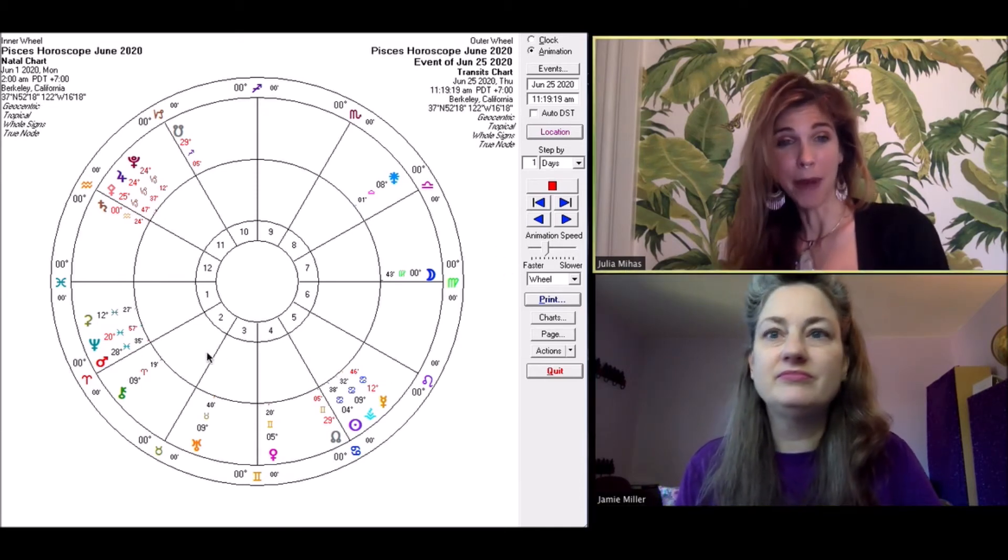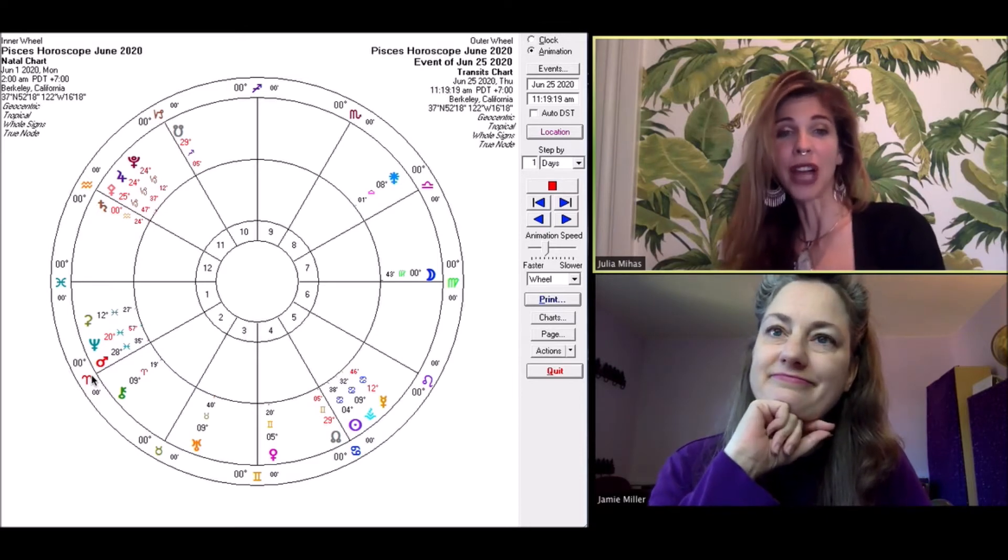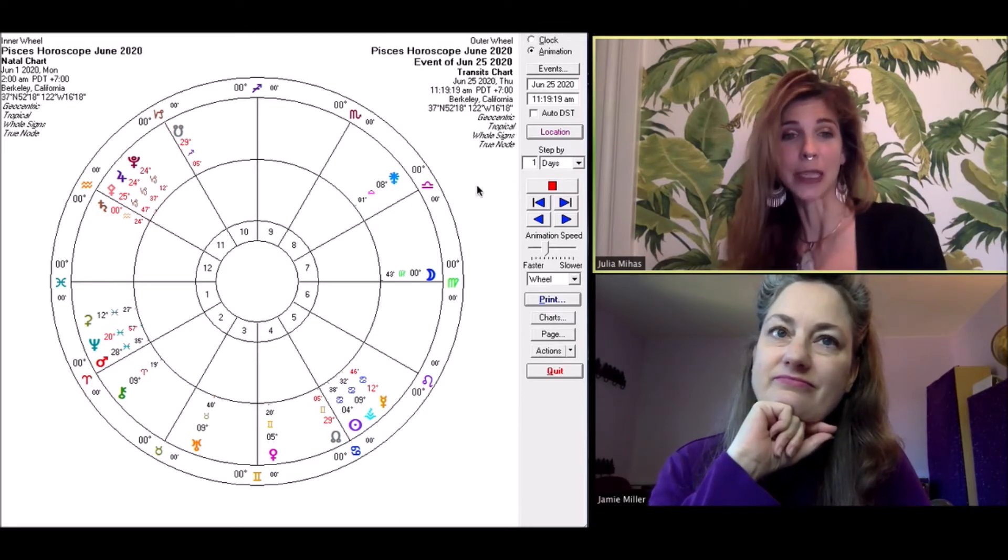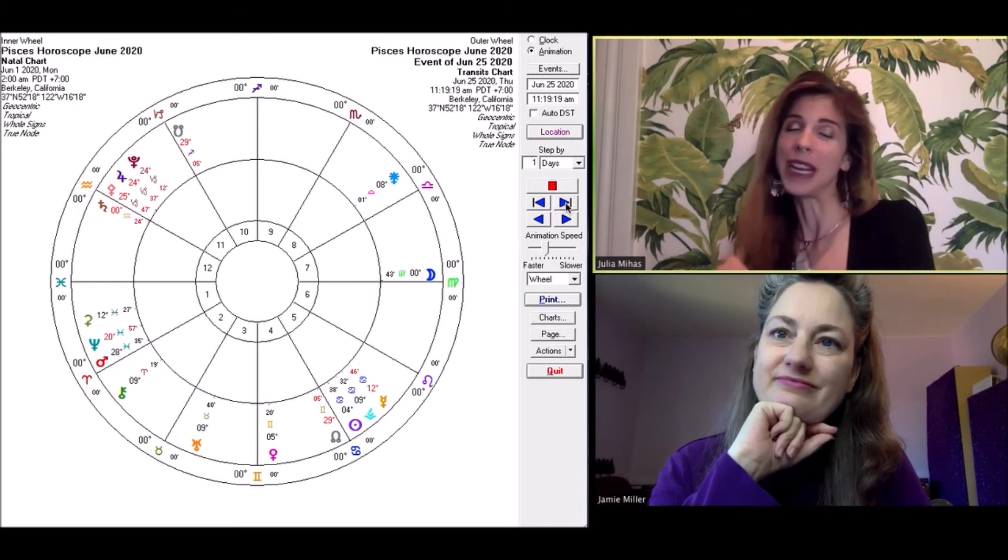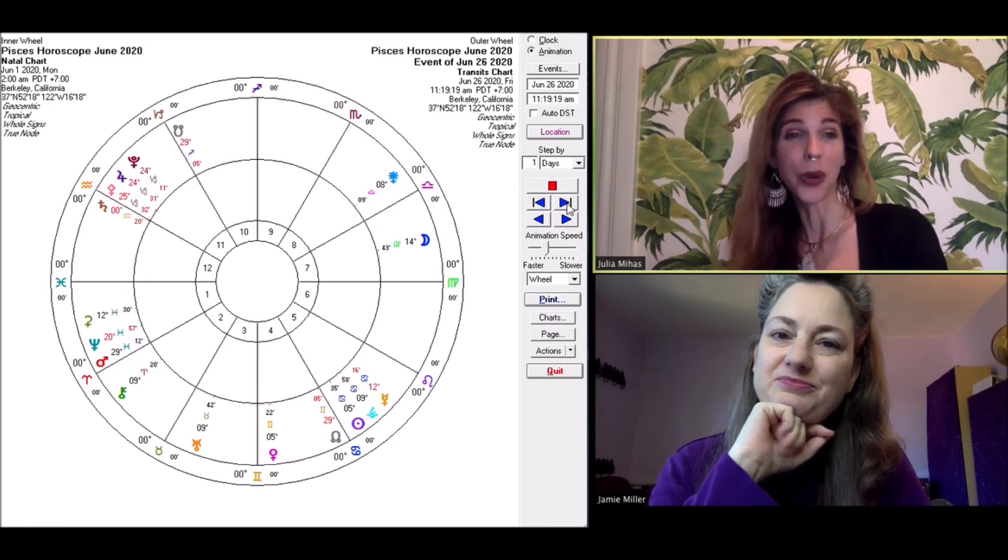And then Mars starts the month in Pisces, which correlates with your first house of self. So you can feel extra, extra energized because you're embodying Mars energy. And that also means that you're much more willing to kind of assert yourself and stand up for yourself. But just make sure that you don't overdo it, Pisces.